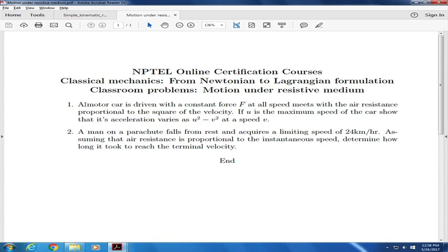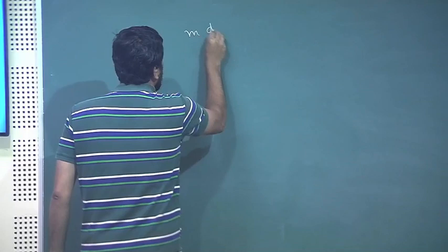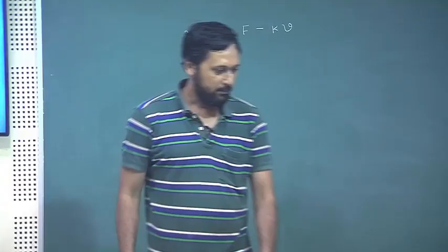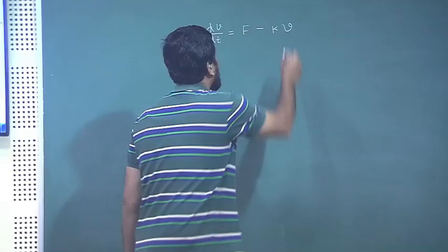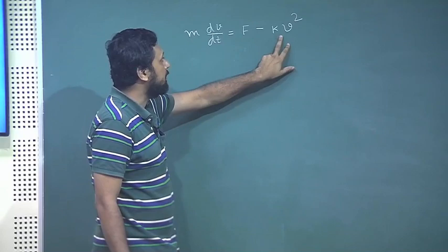The first problem: a motor car is driven with a constant force f at all speeds and meets with resistance proportional to the square of the velocity. If u is the maximum speed of the car, show that the acceleration varies as (u² - v²) at speed v. The equation of motion is m dv/dt = f - kv², because the resistive force is proportional to v².